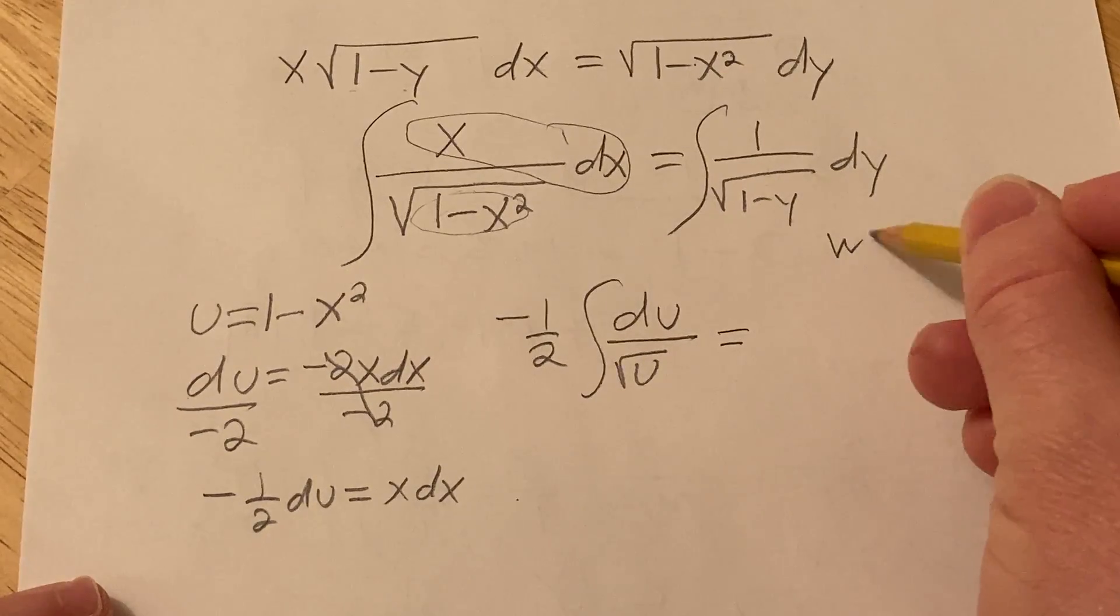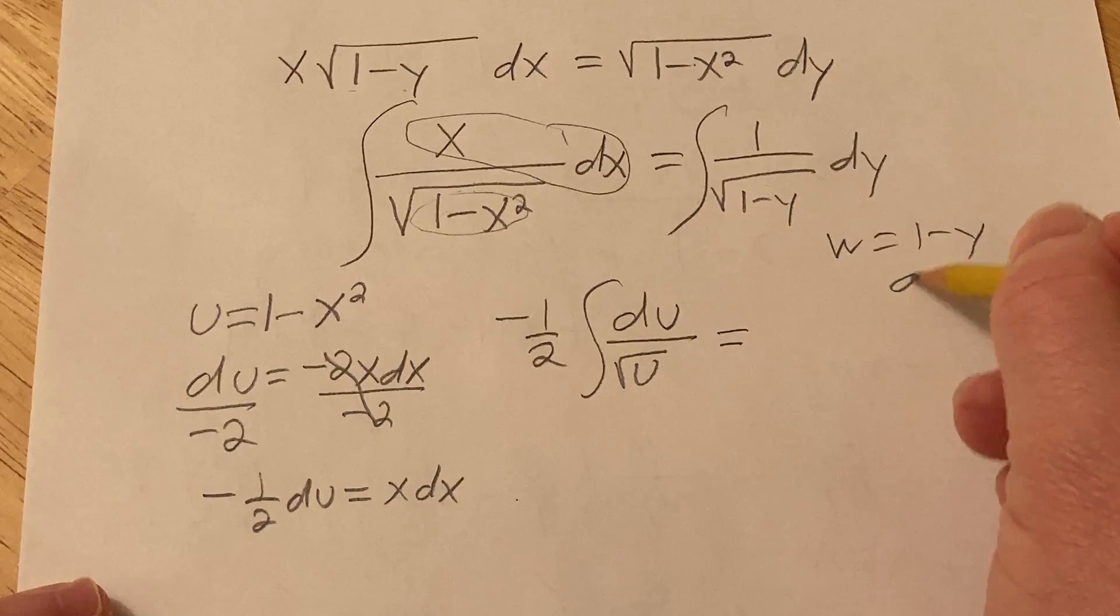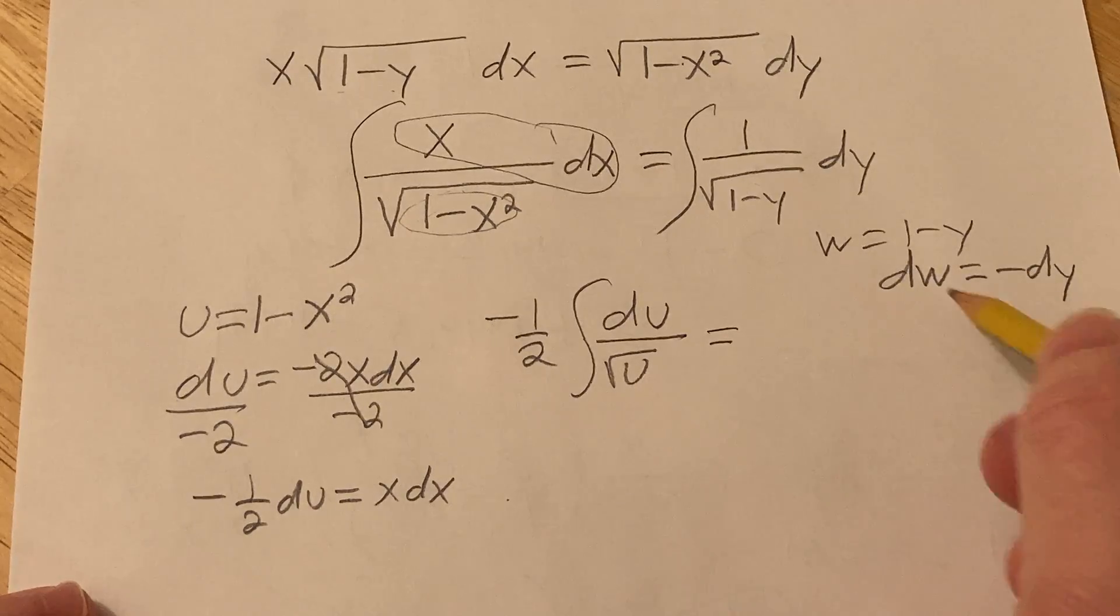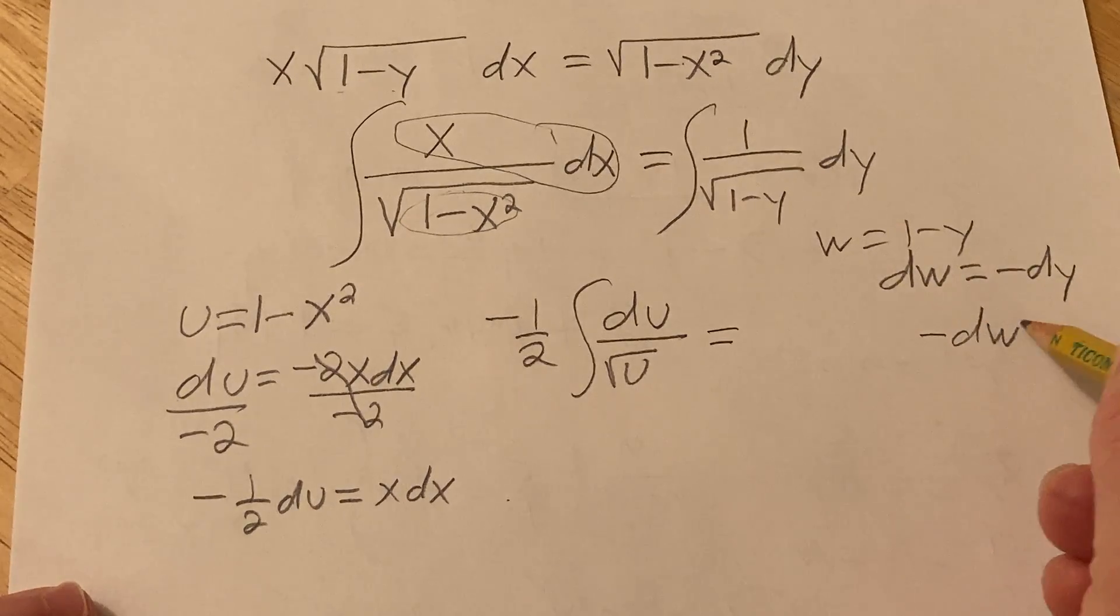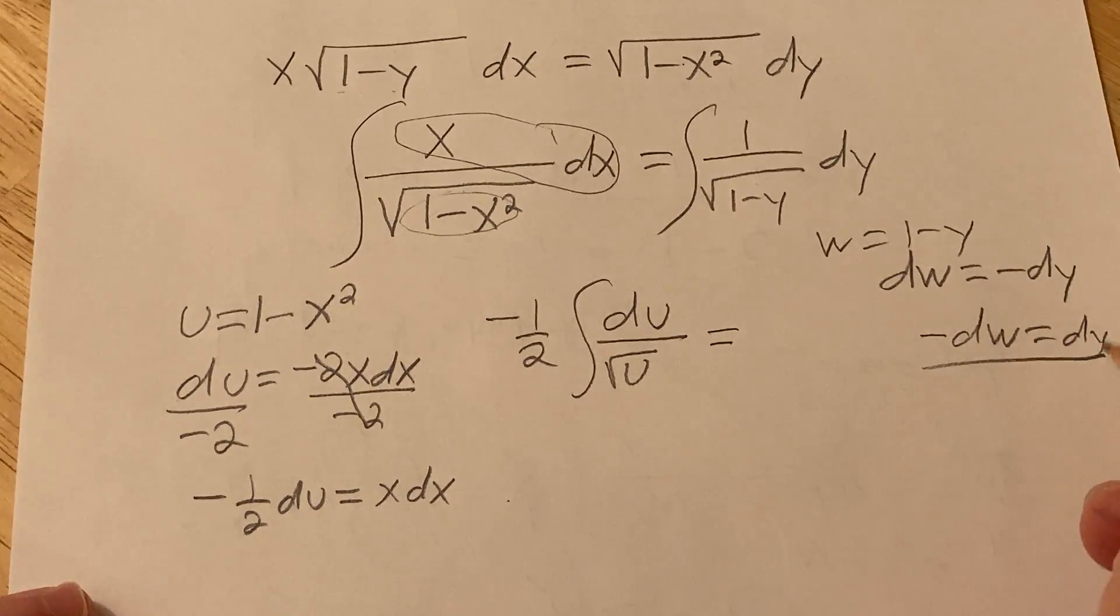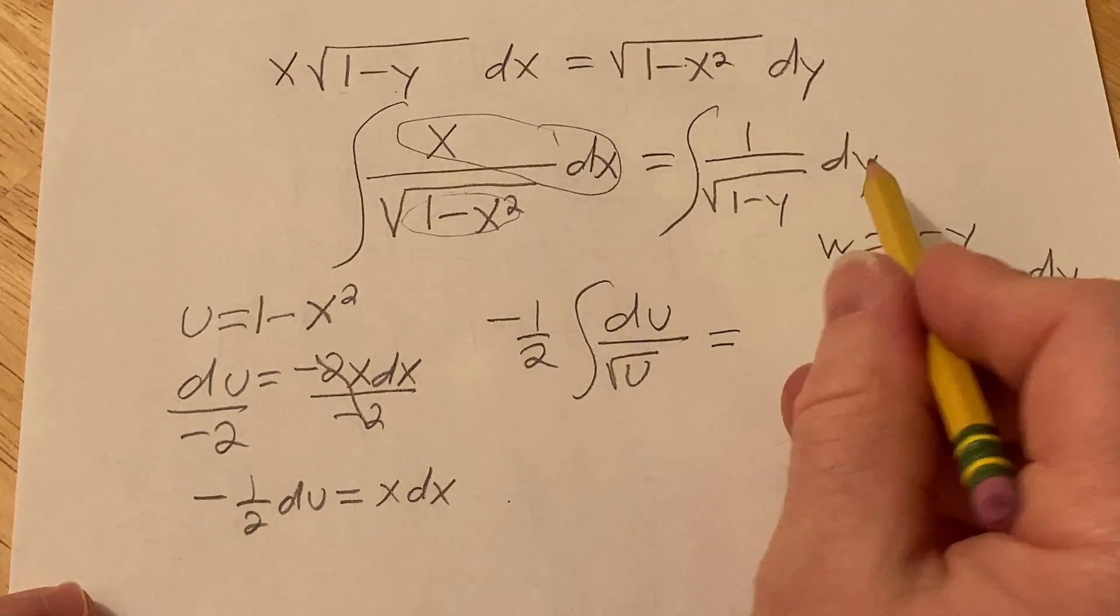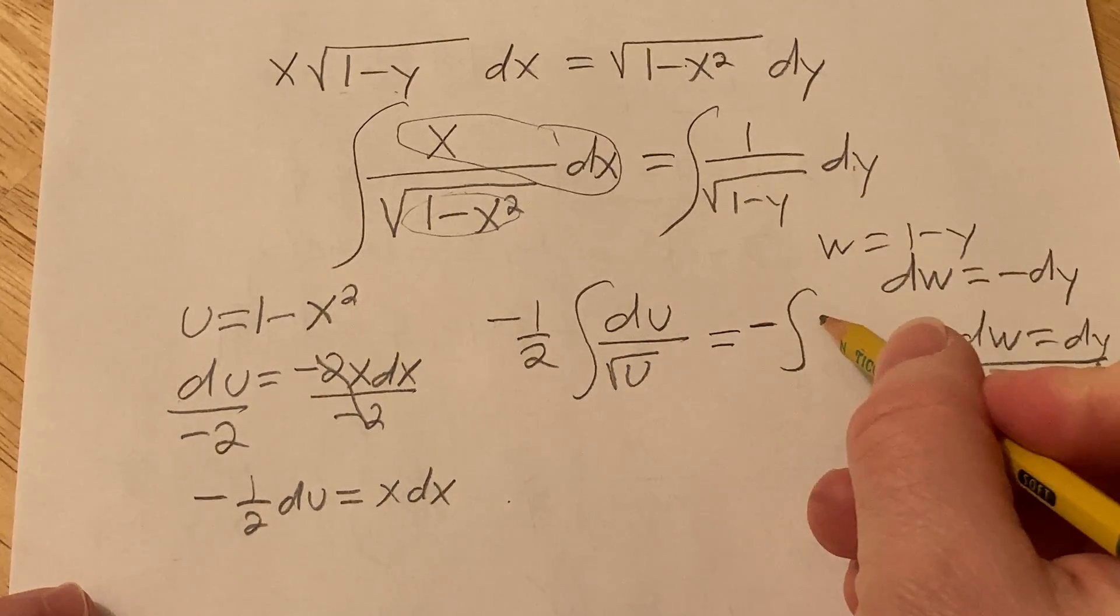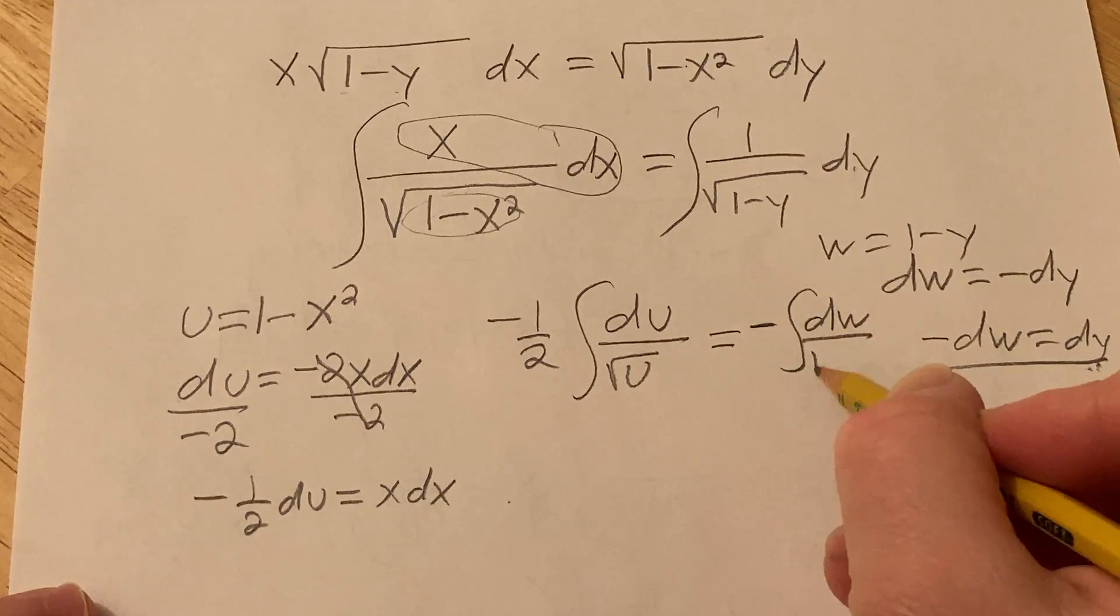Over here we can do the same thing. I'll let w equal 1 minus y. So dw is minus dy. But there's no minus here. So you have to multiply or divide by the minus 1. So you get minus dw equals dy. And now we're ready to make the substitution. The dy is going to give us a minus, I'll pull it out, dw over the square root of w.